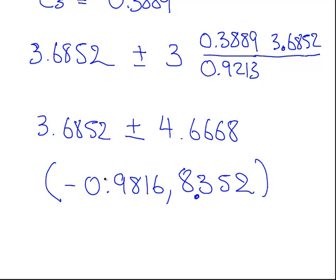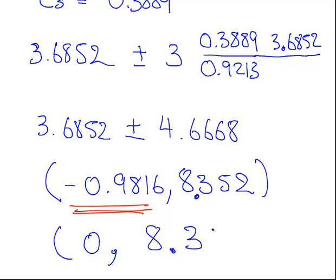Here's the thing: this is a negative number. You can't have negative standard deviations, so what you do there is just replace it with 0. So that is the control limits for your S chart: 0 and 8.352. That ends that question.